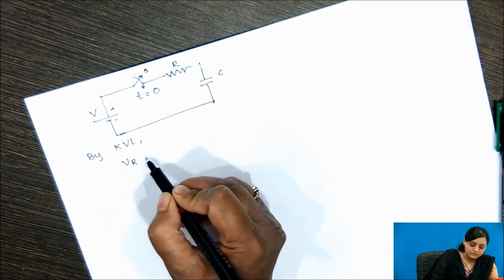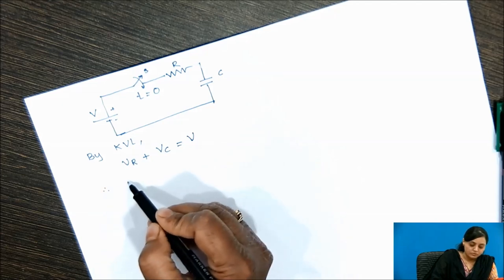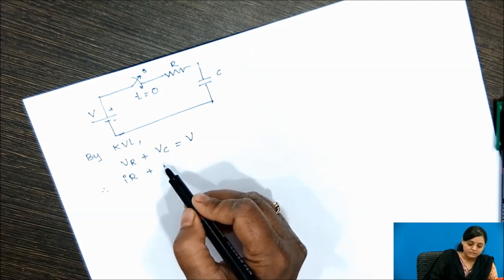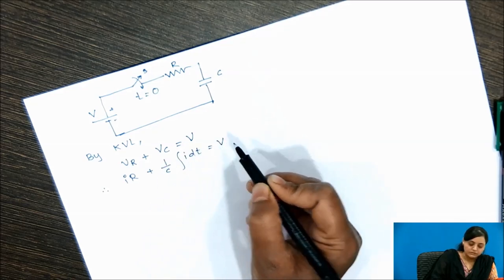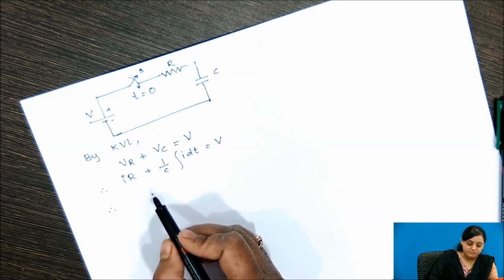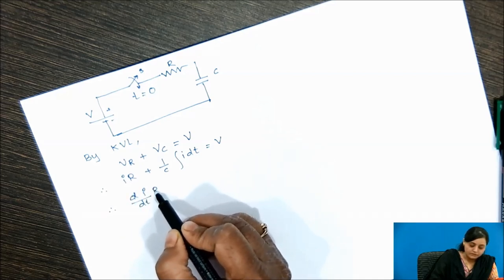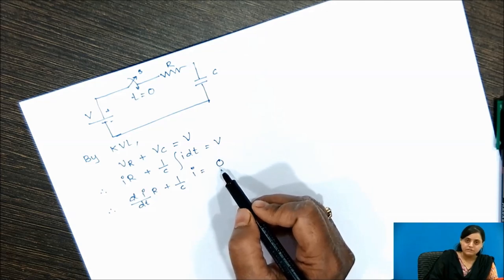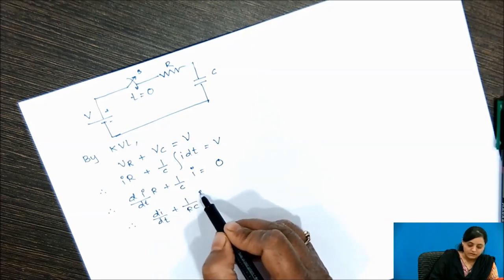Let us write the equation for this circuit using Kirchhoff's Voltage Law. Voltage across resistance plus voltage across capacitor equals total available voltage V. Using Ohm's law, V_R = iR, and voltage across capacitor is (1/C)∫i dt = V. Taking the derivative with respect to time, we get R(di/dt) + (1/C)i = 0, since voltage is constant and its derivative is zero.